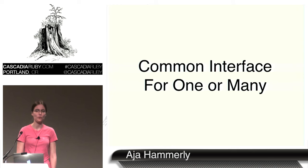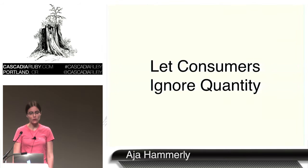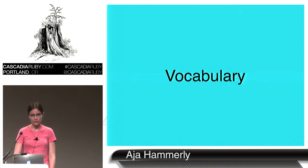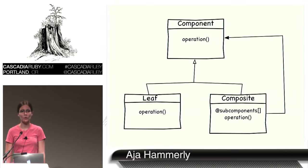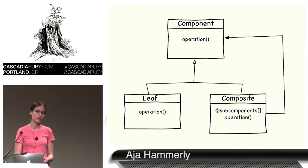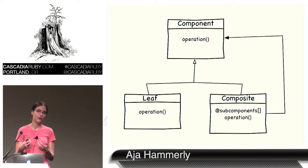Composite. What is it? It's a common interface for one or many things — a way of letting consumers ignore the quantity of objects they're dealing with. The component is the interface all elements of your composite implement — in this example, everything implements an 'operation' method. A leaf is something with no subcomponents. A composite also implements operation but has a collection of subcomponents, and its operation method completes the operation on all of them.